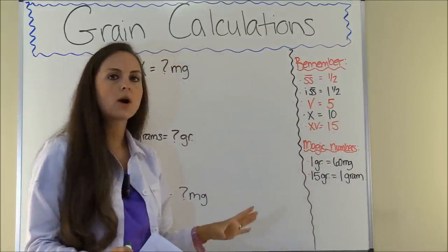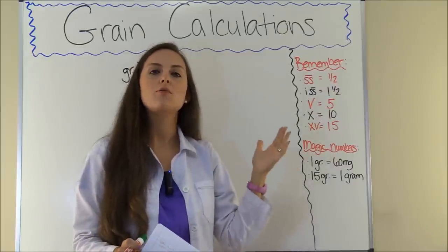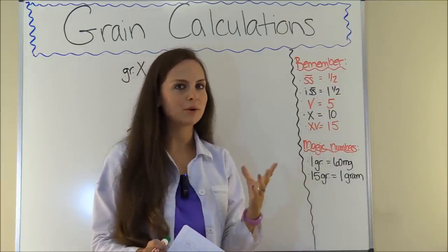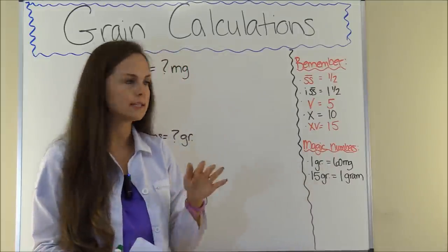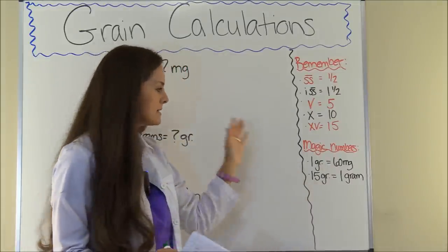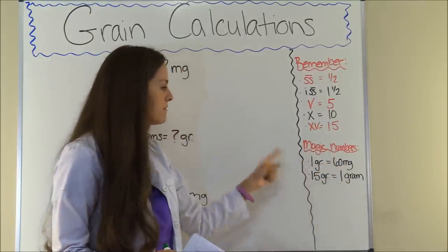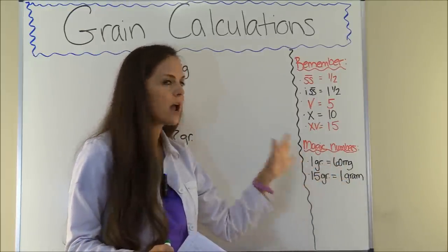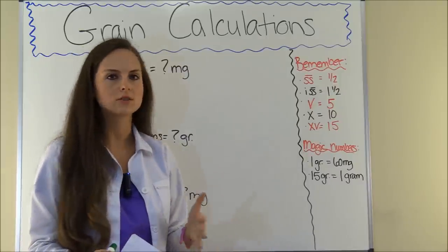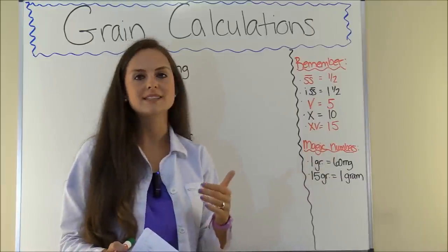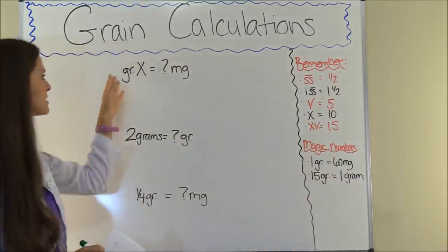Whenever I solve these problems, I use dimensional analysis. The magic numbers you want to remember are: one grain equals 60 milligrams, and 15 grains equals one gram. All we have to do is plug those in and we can get our answer depending on whether we're trying to get to milligrams or grains. Let's get started with some basic conversions.